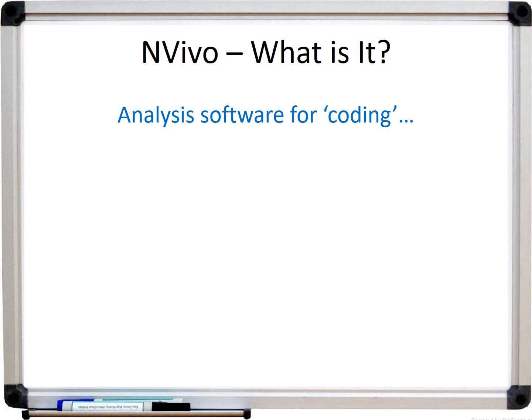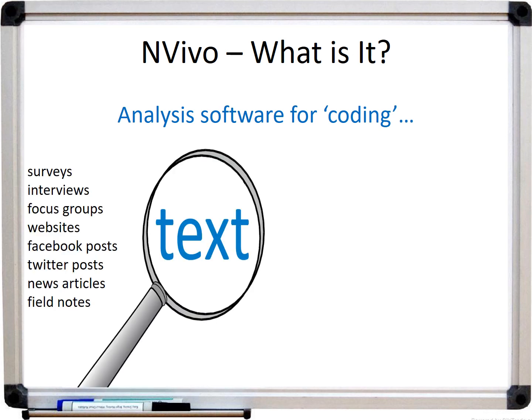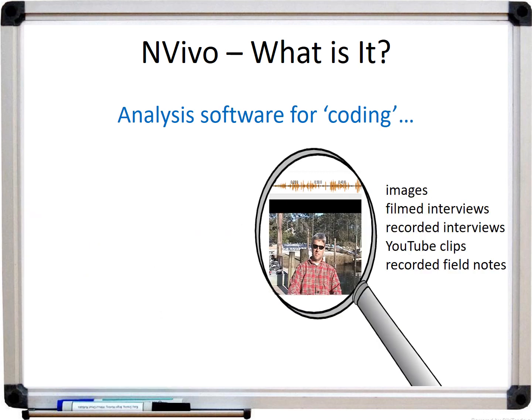Qualitative researchers are often analyzing text-based sources, and listed here are some examples of text-based sources that NVivo can be used to analyze. It can also be used to analyze audiovisual materials, such as these listed below.